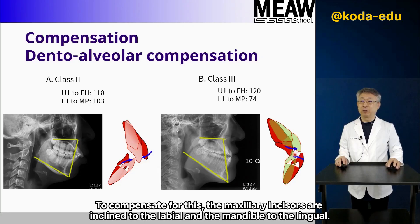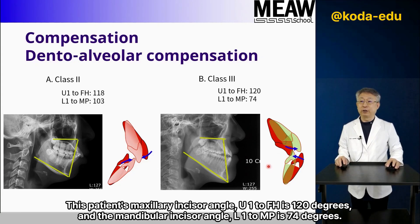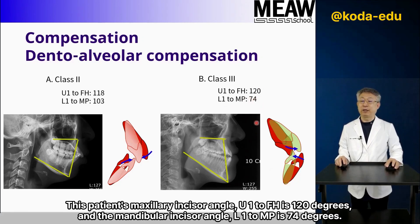To compensate for this, the maxillary incisors are inclined to the labial and the mandibular incisors to the lingual. This patient's maxillary incisor angle, U1 to FH, is 120 degrees, and the mandibular incisor angle, O1 to MP, is 74 degrees.